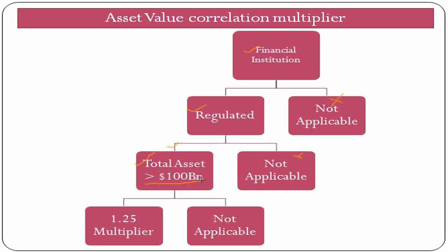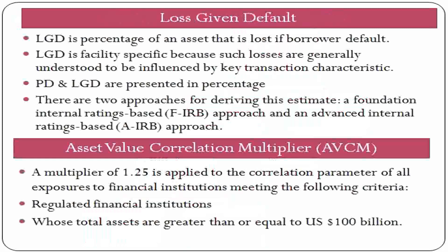The aim of AVCM is to charge an additional risk weight or maintain additional capital. Because if we are trading with a large financial institution and one big financial institution files for bankruptcy, it will have an impact on the whole banking industry. Therefore, we are required to hold more capital, and the multiplier given in the Basel Accord is 1.25, meaning we multiply our original risk weight by 1.25 or uplift the original risk weight by 25%.